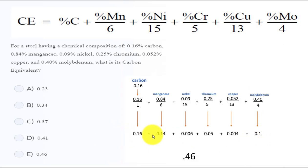So if you add these up together: 0.16 plus 0.14 plus 0.006 plus 0.05 plus 0.004 plus 0.1, you come up with this answer right here, 0.46. So that's it, this is how I got 0.46.